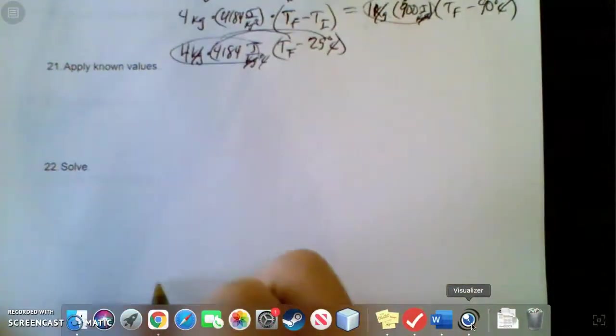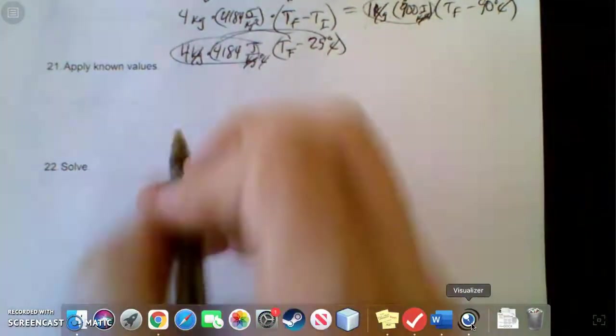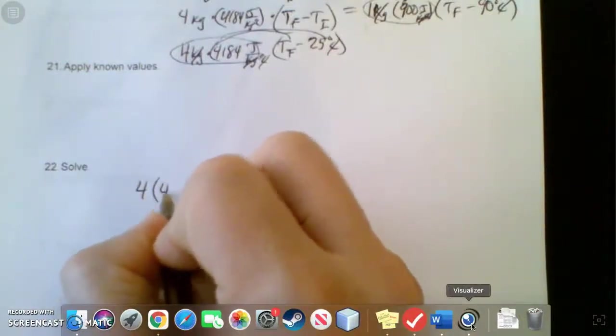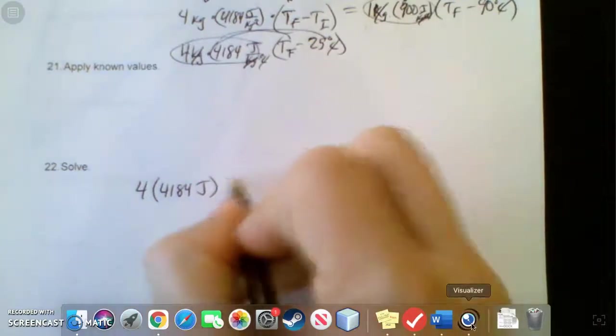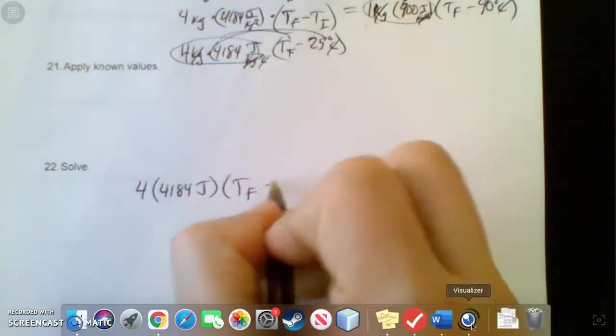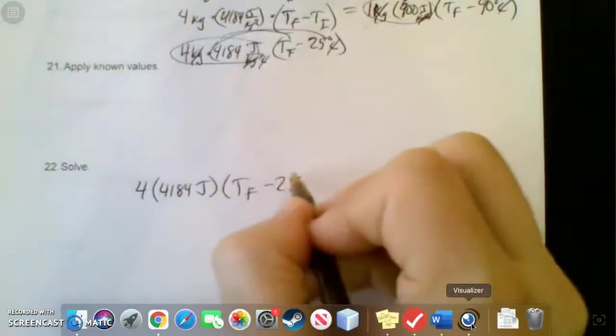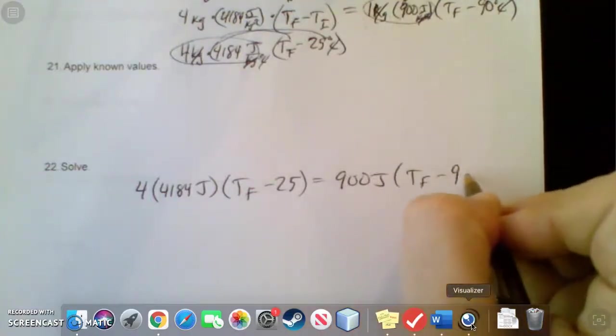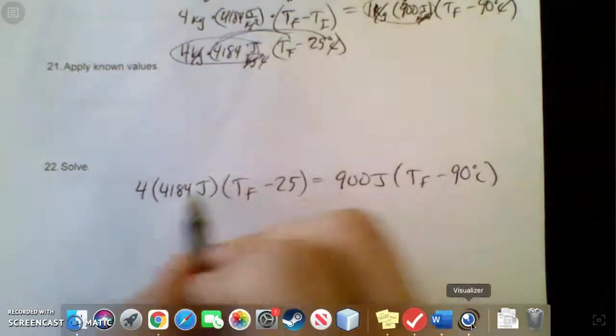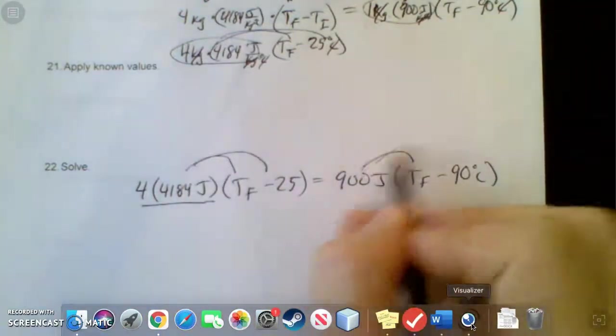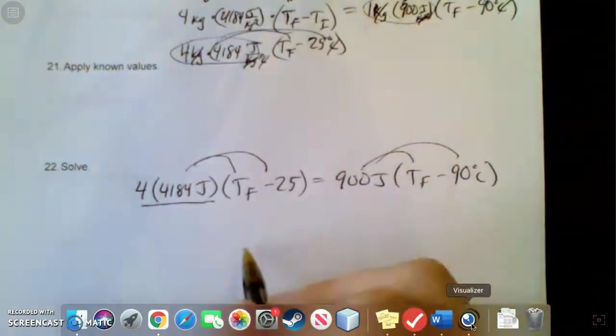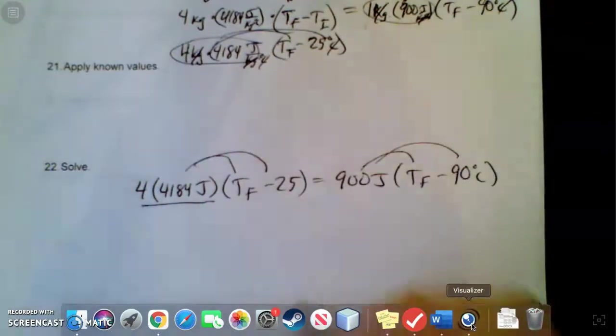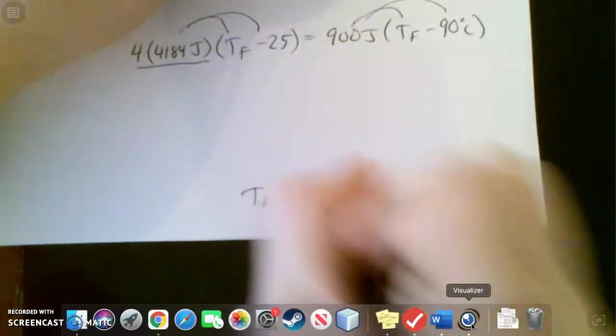You got this set up. Celsius will cancel with Celsius and we'll be left with joules cancelling with joules on the other side. You're basically going to have to distribute this and distribute this. I would put the 1 and 900 together and 4 and 4184 together. Apply the algebra skills you need to get TF by itself, because in the end you're looking for TF. This should get you at least enough of a start. So whatever number this is distributed, whatever the 900 distributed, get all the TF's to one side and then divide to get TF by itself. Your end goal is to find TF.